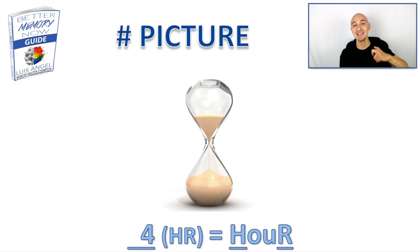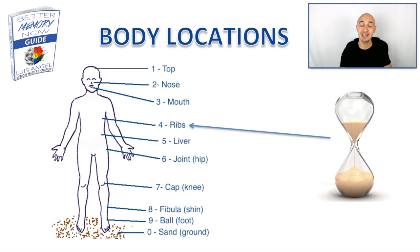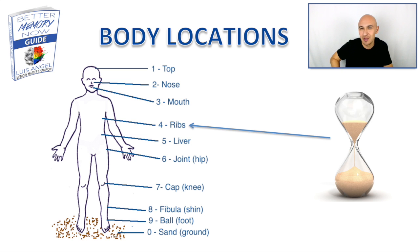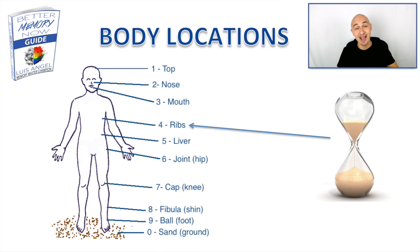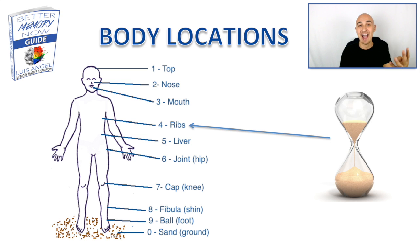Number four is hourglass. Our fourth location is our ribs. Picture an hourglass and maybe you're breaking it on your ribs — you have sand on your ribs now and glass all over the ribs. The more action you add to it, the easier it is for you to recall it. So number four is hourglass.